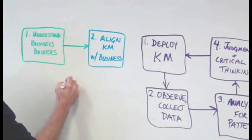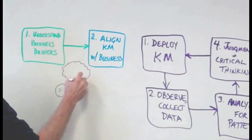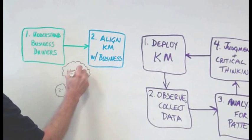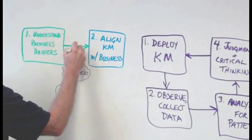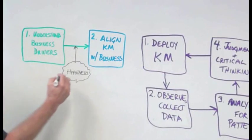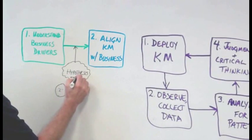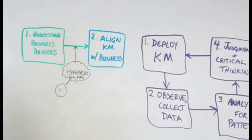In between steps one and two, we might apply a little bit of the scientific method and develop a hypothesis. A hypothesis might be, if we implement this particular KM approach, out of all the choices, we're most likely to line up with the business focus best.